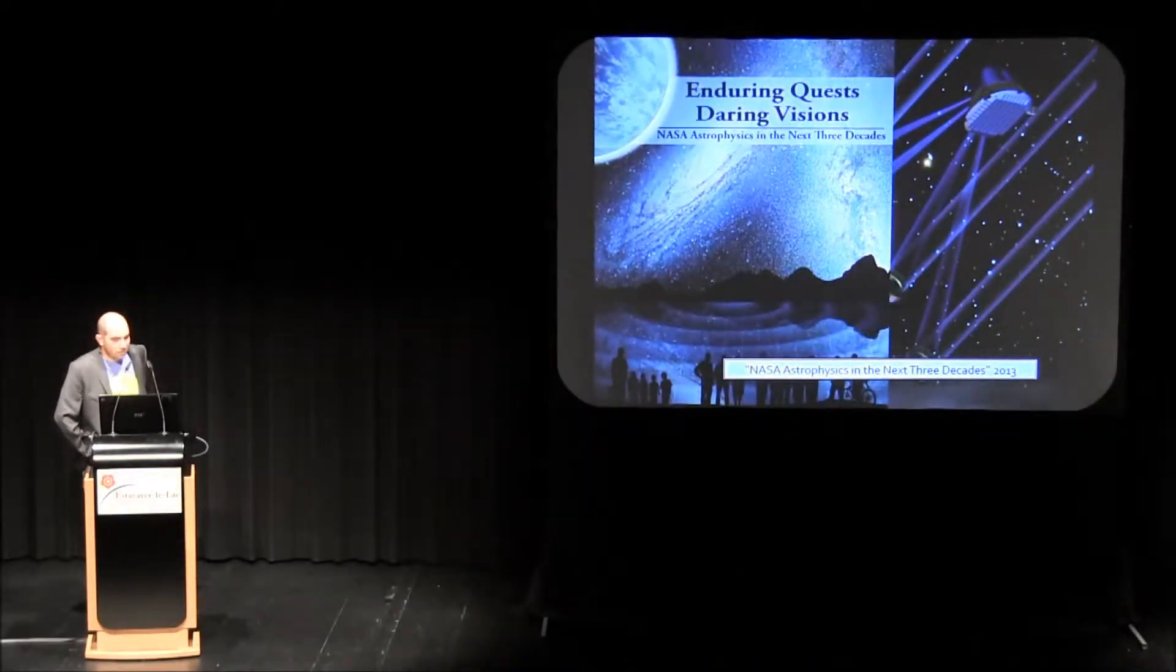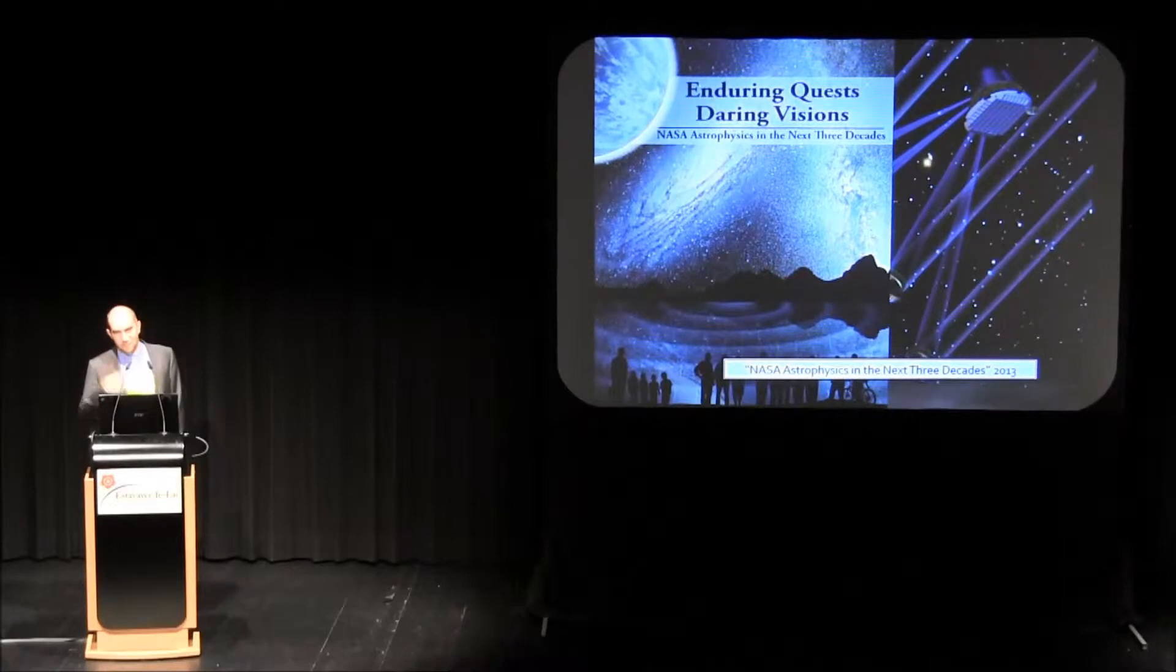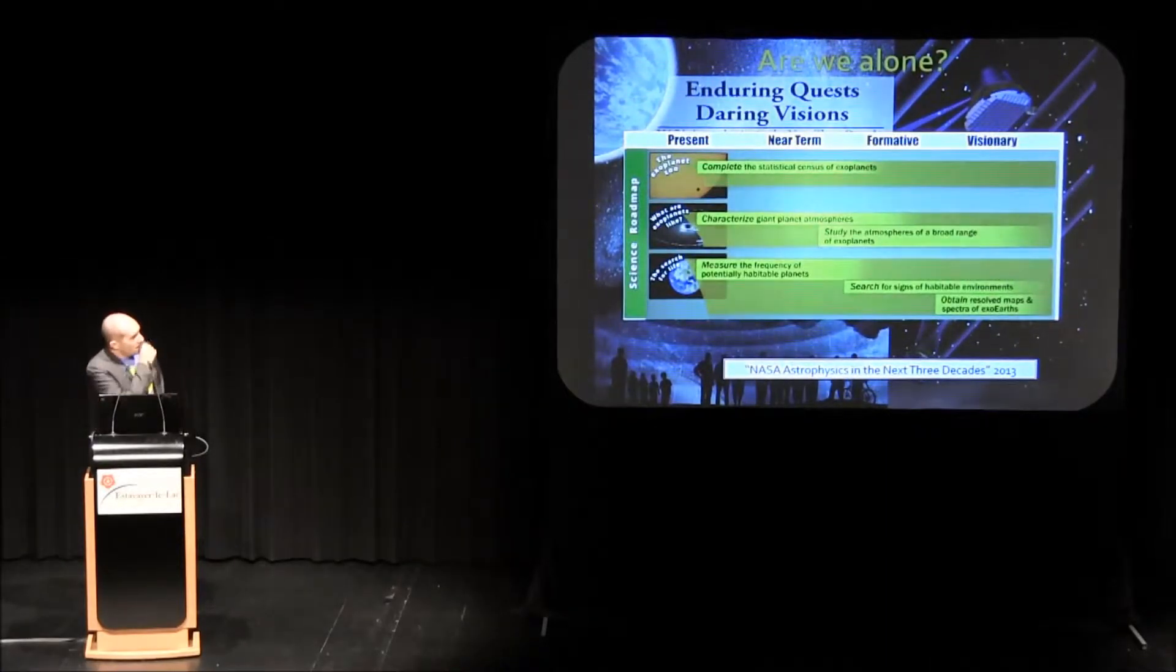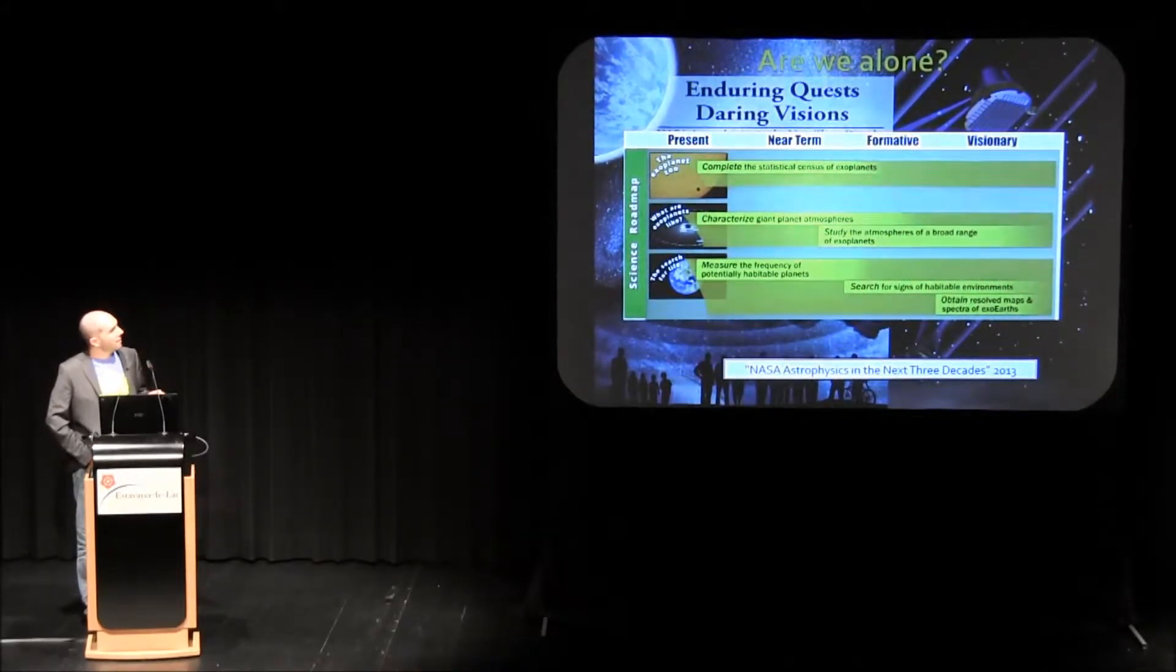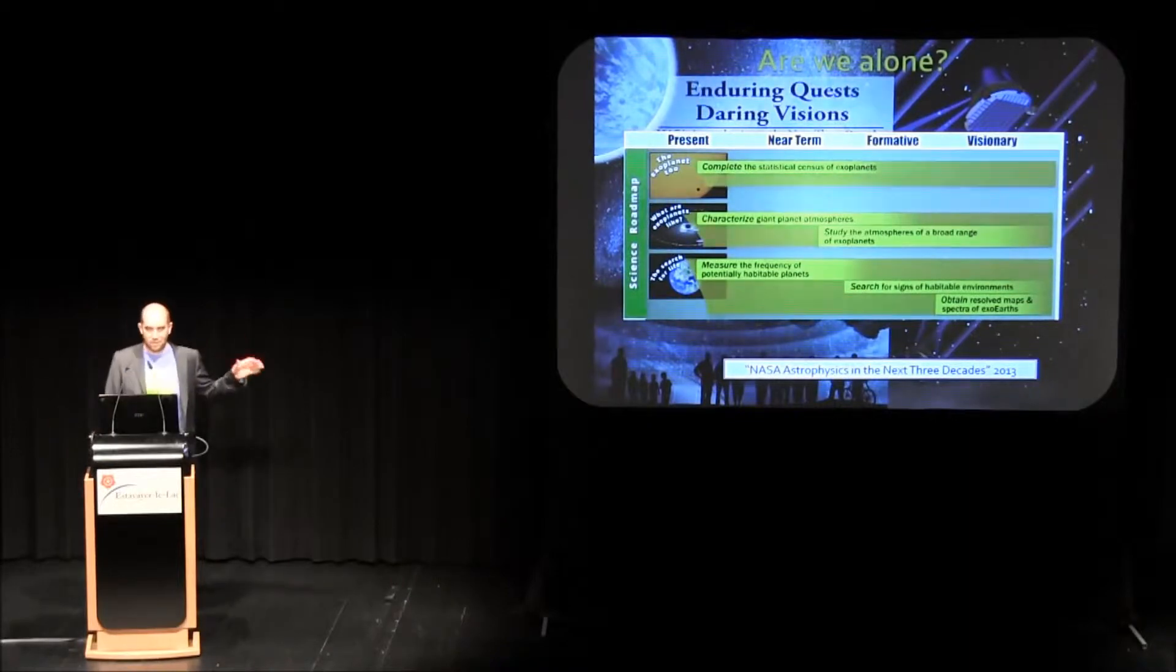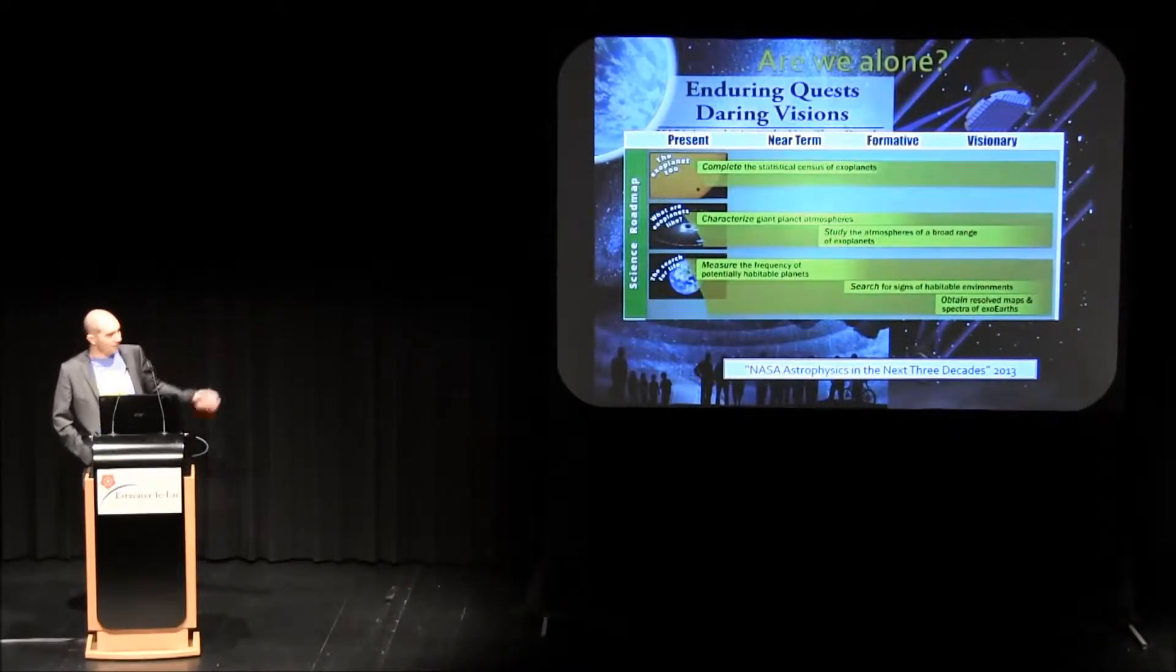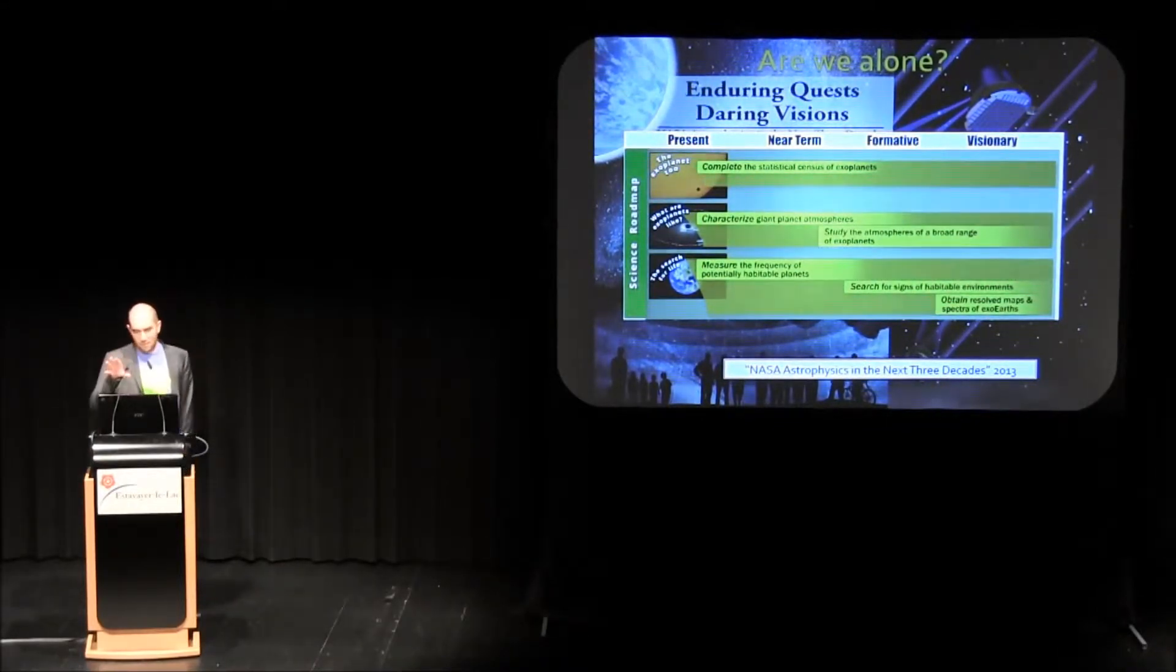To put it into context, there are several very important questions in astronomy, and one of them is, are we alone? There's a roadmap to answer this question on the NASA side, and one of the ways to answer this question, one of the visionary points, is how to characterize exoplanets and how to get images of exoplanets.